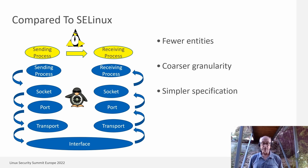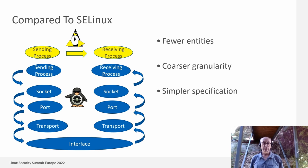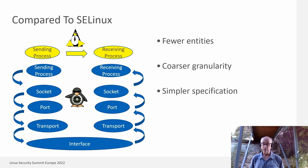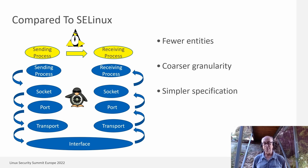For example, if you want to send a UDP packet on SMAC, you have the sending process as the subject, the receiving process as the object, and a single access check. On SELinux, if you want to do the same operation, the sending process sends information to the socket, which sends information to the port, sends information to the transport, sends information to the interface, and that goes back up the stack from the interface to a transport, a port, a socket, and finally to the receiving process, giving you an opportunity to make access control checks at each of these transitions. This is a finer granularity, and it has its advantages, but it tends to be a bit more complicated to describe.